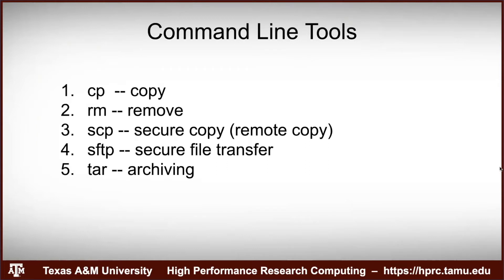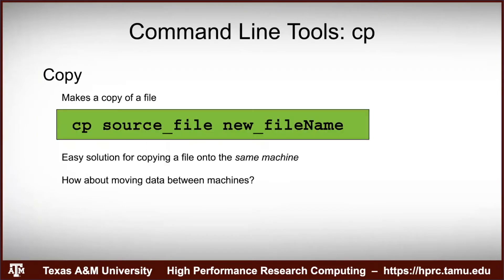The command-line tools we'll cover are: cp for copying, rm for removing, scp for secure copying between hosts, sftp for secure file transfer, and tar for archiving. The cp command is simple — it copies a file. The syntax is 'cp source_file new_file_name'. It's best for copying a file on the same machine, like from your home directory to your scratch directory.